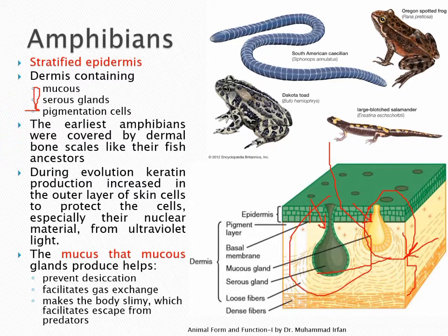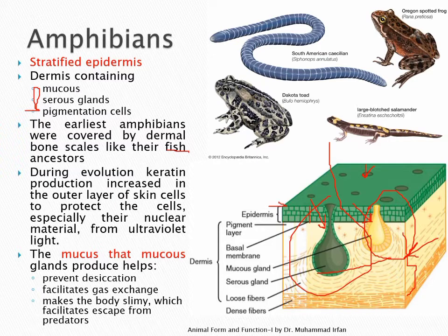The earliest amphibians were covered by dermal bone scales, like those present in fishes, where the connective tissue dermis has modified cells bearing scales. During evolution, keratin production increased — keratin is a protein deposited in the outer layer of skin cells of the epithelium. Since the epithelium is multiple layers thick, the uppermost layer has the most keratin deposition, which protects the animal from ultraviolet light.